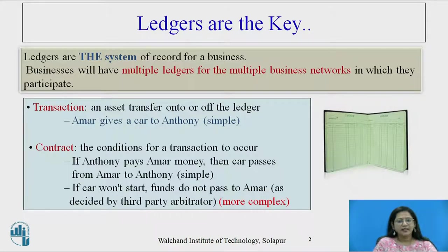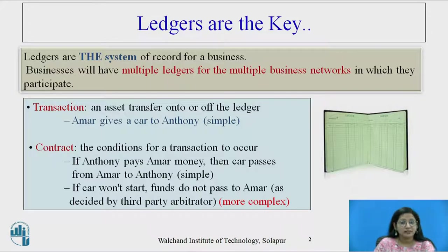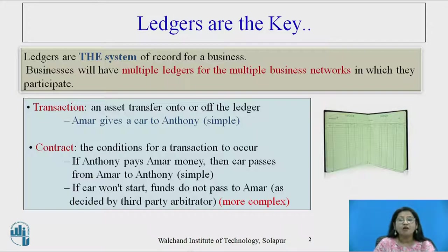What are ledgers? Ledgers are the key — ledgers are the system of records for a business. A business will have multiple ledgers for multiple business networks in which they participate. There are two terminologies related to ledger. The first is transaction: an asset transfer onto or off the ledger. For example, Amar gives a car to Anthony — that is a simple transaction.